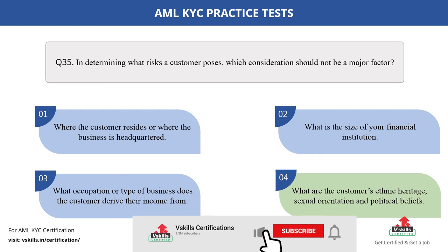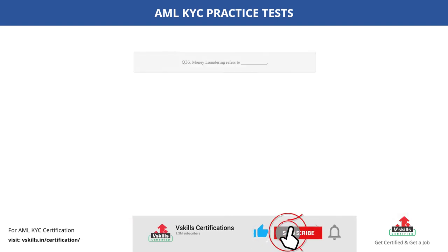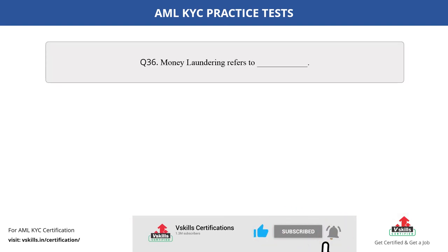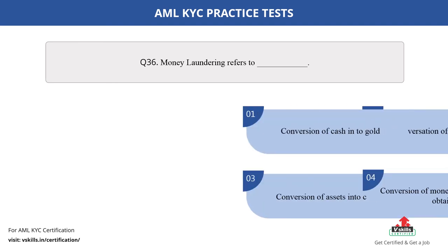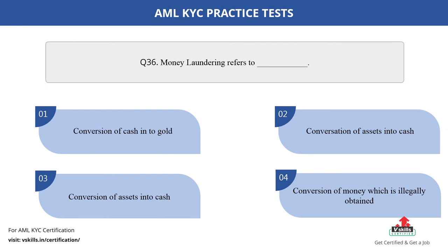Question number 36. Money laundering refers to dash. Fill in the blank. The options are: A. Conversion of cash into gold; B. Conversation of assets into cash; C. Conversion of assets into cash; D. Conversion of money which is illegally obtained. The correct answer is option D.